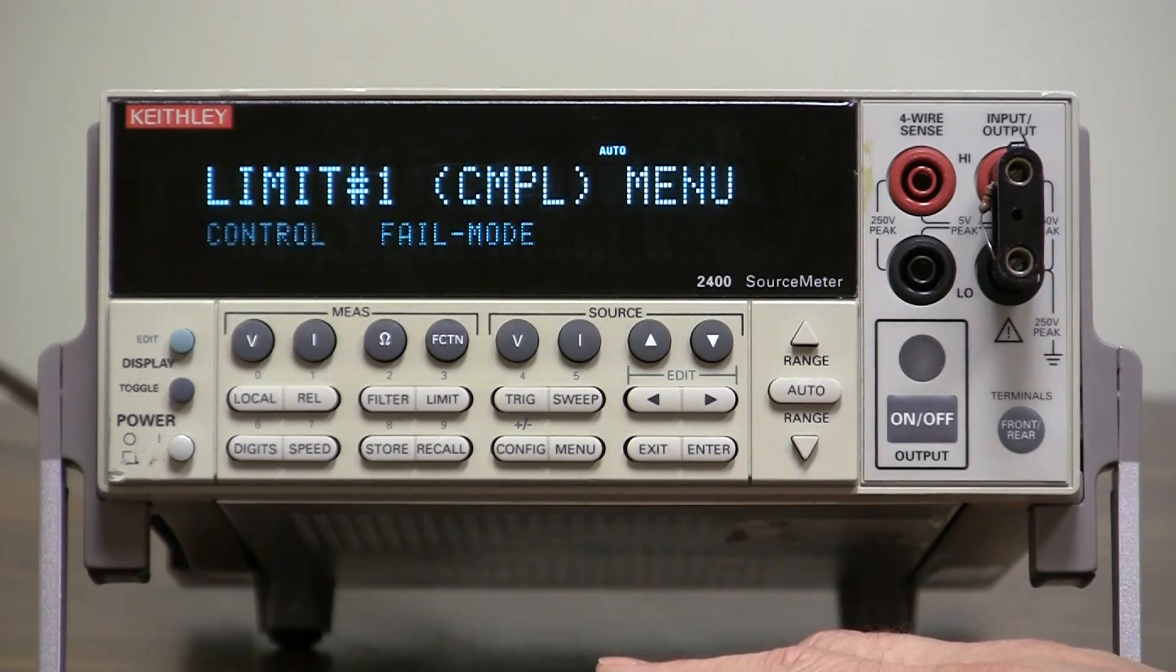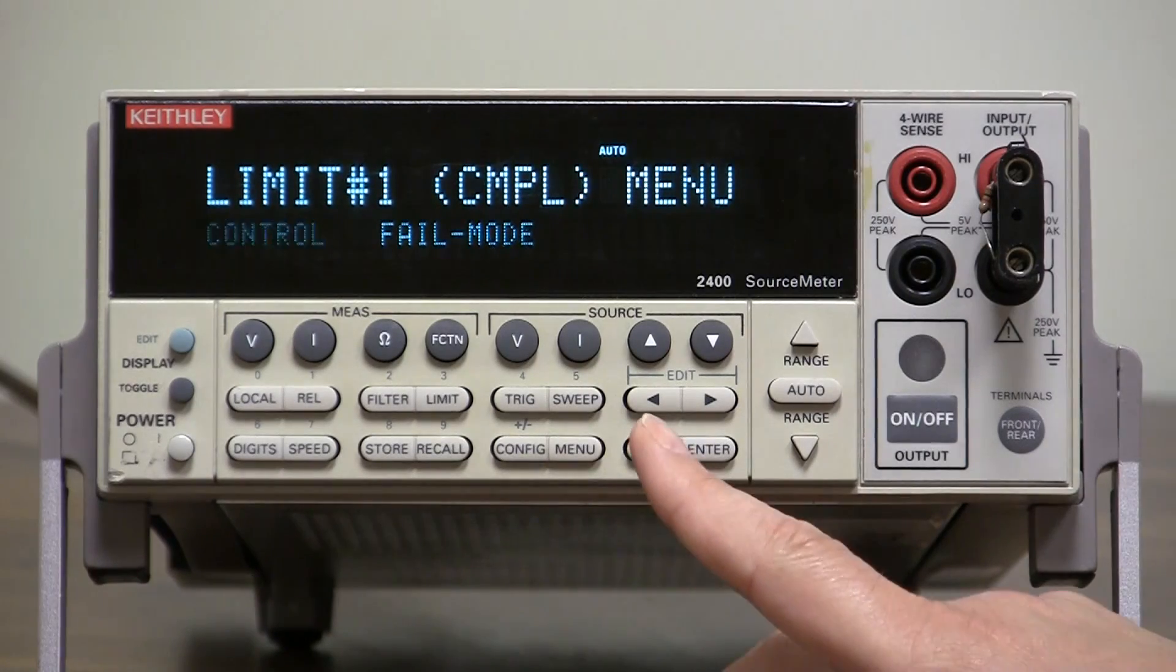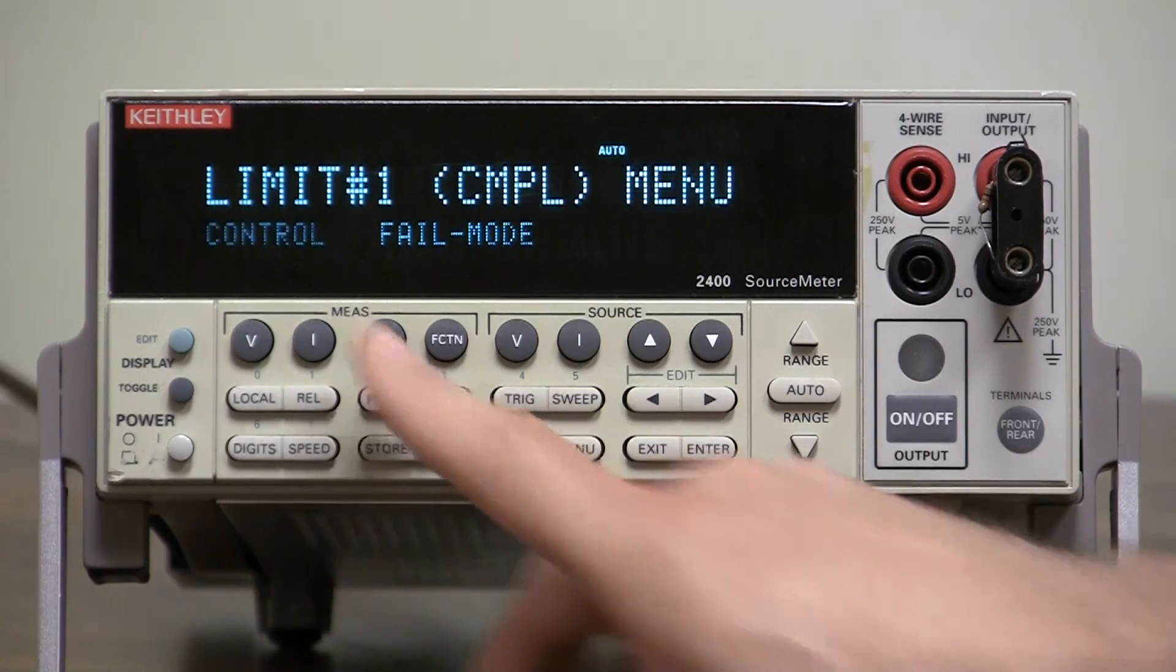Hardware limits on this source meter is the compliance value. If you want to put a limit on what the compliance is or when it fails, this is the one you would use, the hardware limit. Control is easy enough.